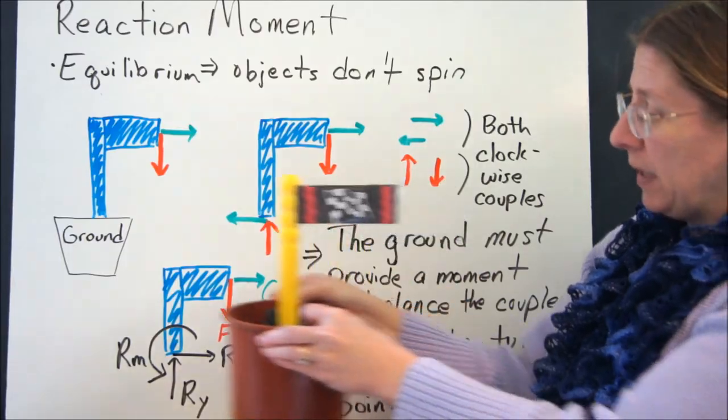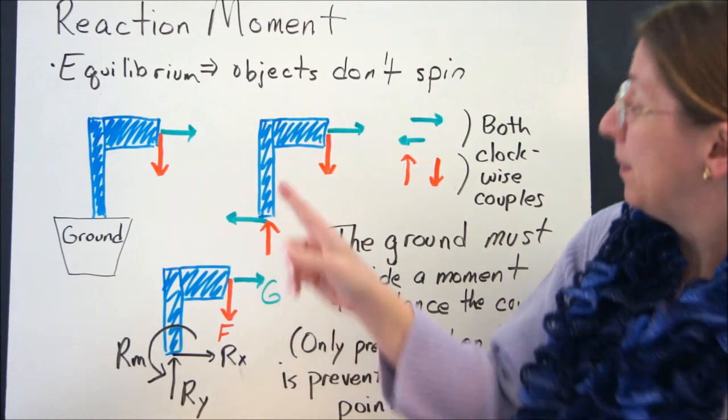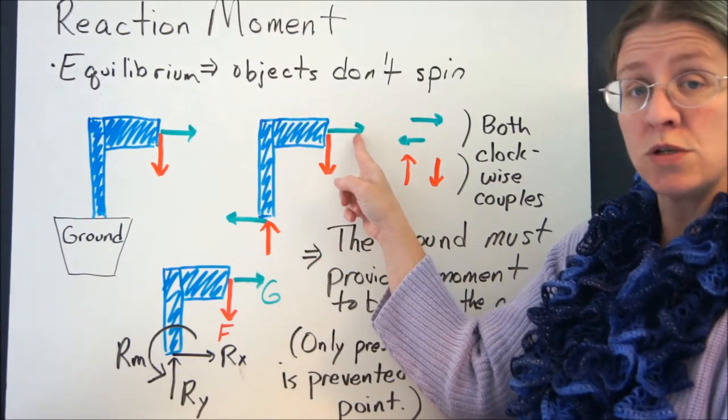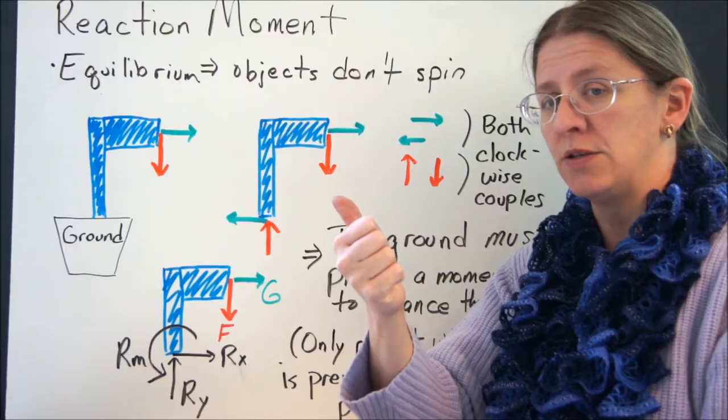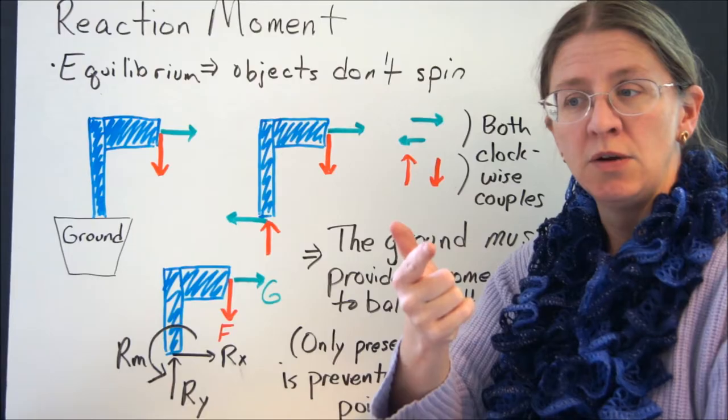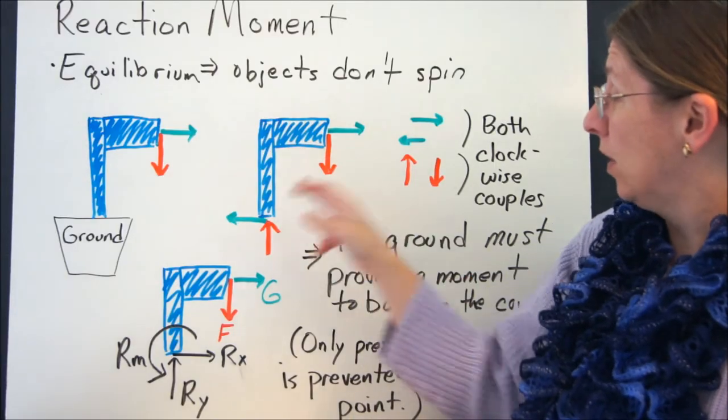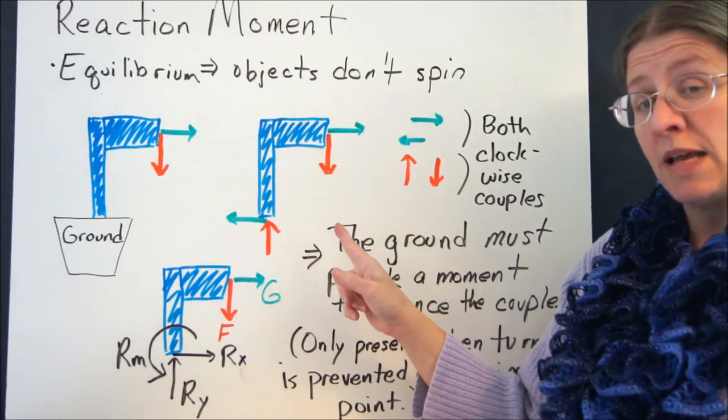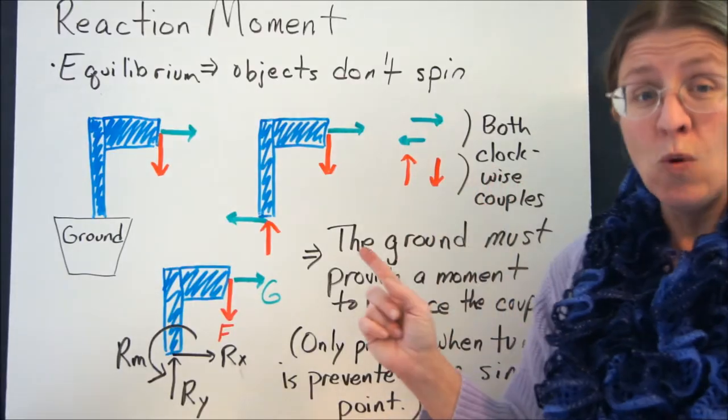But look at what's happening here with these two. If you have this force and that force, those are equal in magnitude and opposite in direction with similar lines. That's a couple, if you think about how that works. And so is the set of red arrows. These two are both, in fact, clockwise couples.